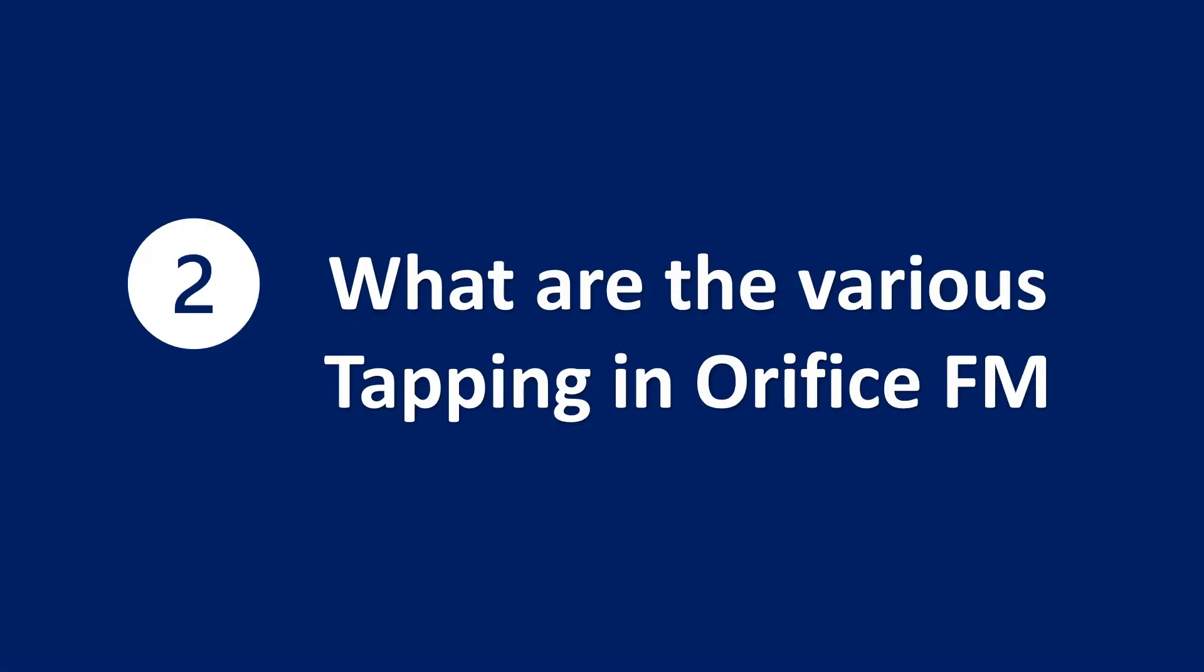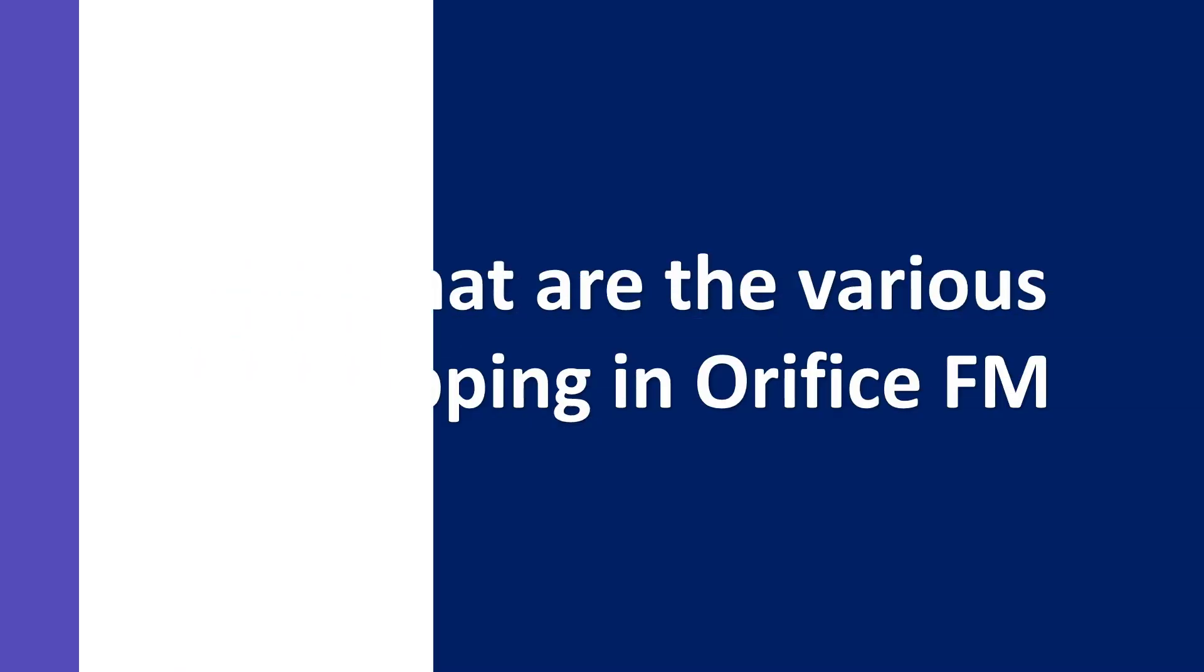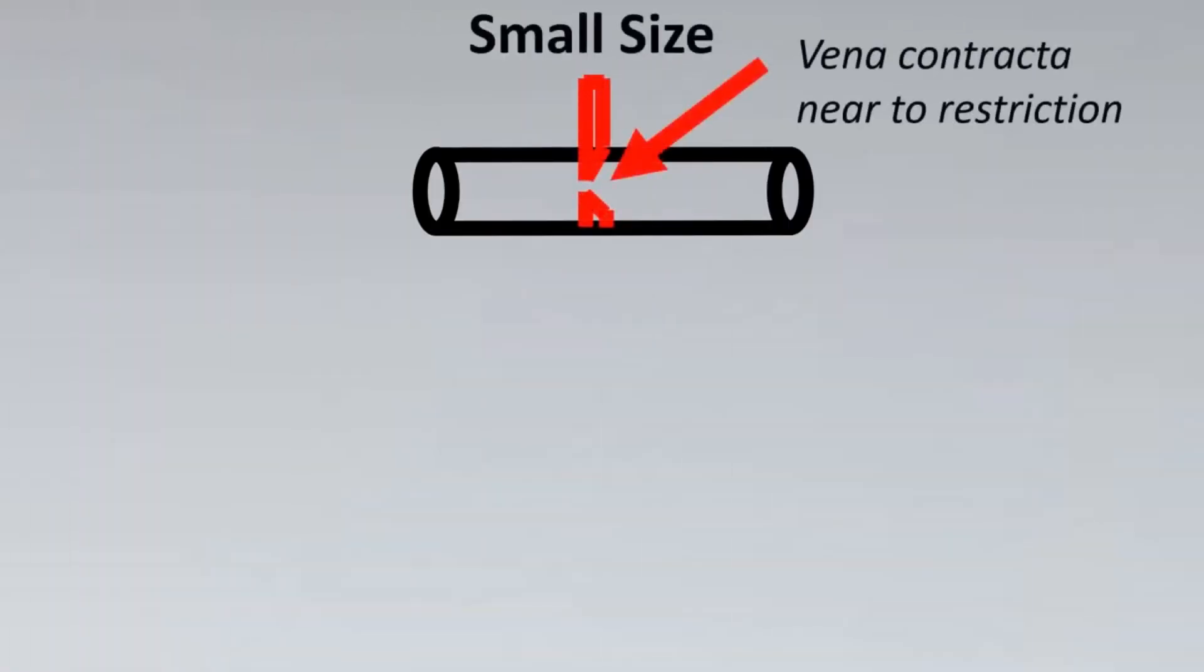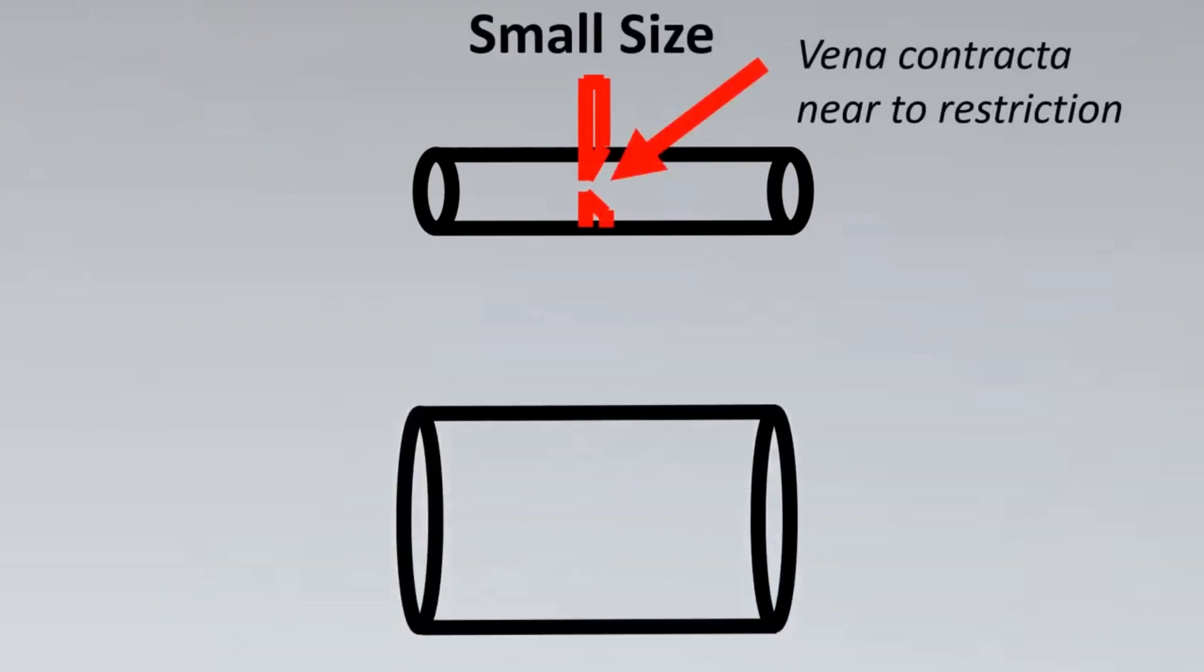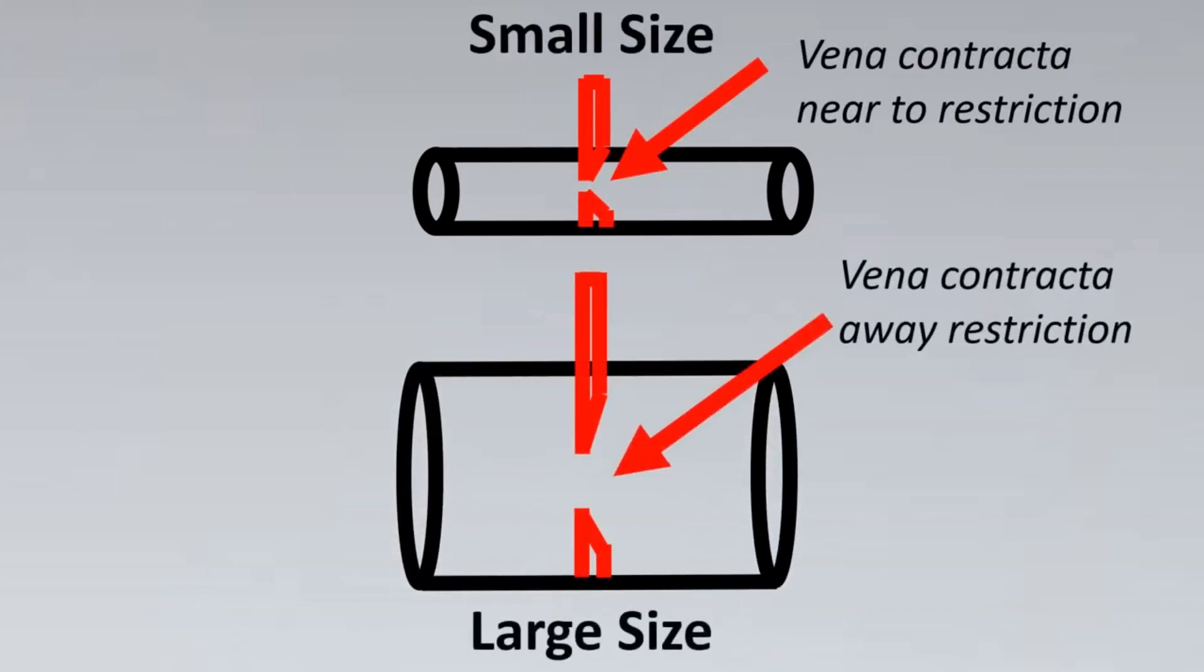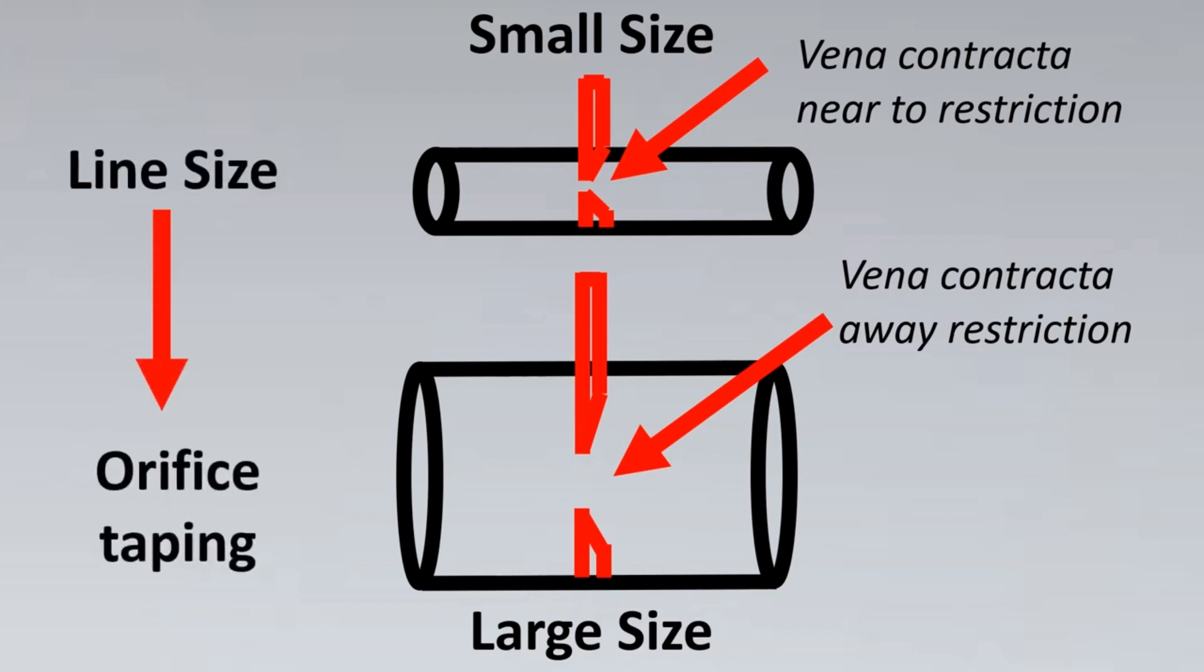The second most asked question is what are the various types of tapping available in orifice flow meters? This concept depends upon line size. For smaller line sizes, the Vena contracta is near to the restriction. However, for larger line sizes, the Vena contracta would be away from the restriction. Does that have any issue on our tapping selection? Absolutely, it has an effect on the selection. The line size basically helps us decide which orifice tapping to take. If the Vena contracta is nearer to the restriction, the tappings would also be taken from near to the orifice. And the farther the Vena contracta is from the restriction, the tappings are taken from that distance or as much approximation as possible from that distance to get the best DP that is available.